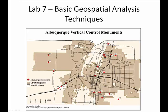Finally, Lab 7 takes the student through a basic geospatial analysis. The lab covers querying data, performing operations such as dissolve, buffer, and clip, and then depicting the final result of the analysis in this map here — Albuquerque Vertical Control Monuments.